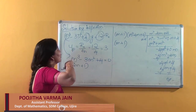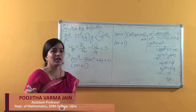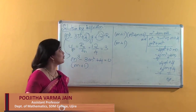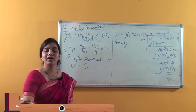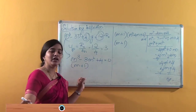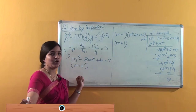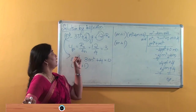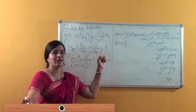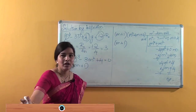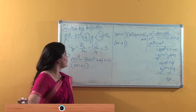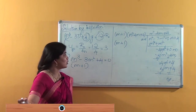The given question is: D-cubed minus 3D-squared plus 4, into y, equals 12. We have found the particular solution — that is yp equals r-naught divided by B-n, which is 12 divided by 4, equal to 3.